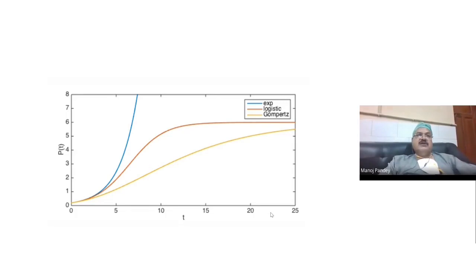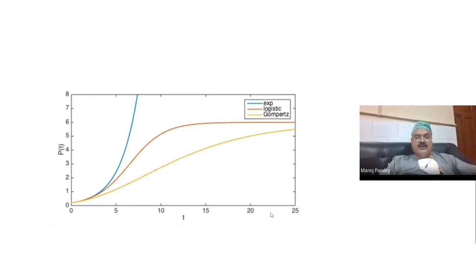In the Gompertzian curve, growth will always keep increasing but the rate of increase keeps getting slower with time. This is because as some cells are being regenerated, some cells die. Cell death in tumors occurs because of hypoxia — as the tumor grows larger, it needs oxygen and nutrients, and the supply of nutrients and oxygen keeps decreasing. So the center of the tumor starts getting necrosed, while the peripheral tumor continues to get nutrition.